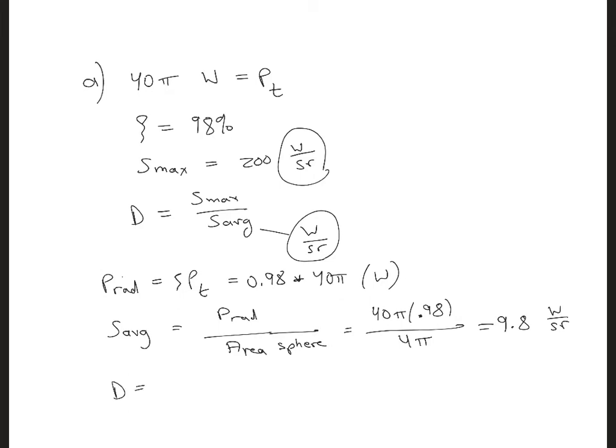Then the directivity is 200 watts per ster radians over 9.8 watts per ster radians. And that's 20.41. And if we wanted to put this into units of dBi relative to an isotropic antenna, we would take 10 log base 10 of 20.41. And that is 13.1 dBi.